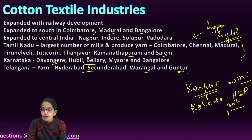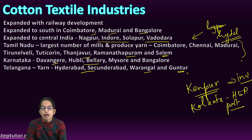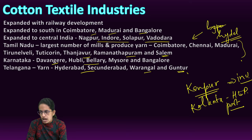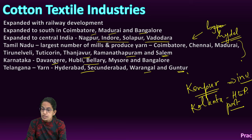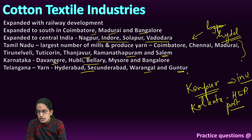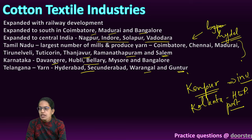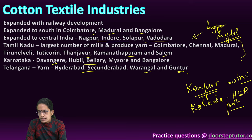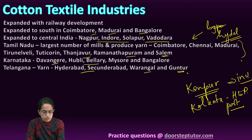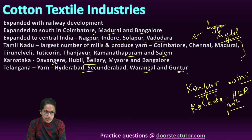In Uttar Pradesh, Kanpur became a major center due to local investment, along with Hathras, Saharanpur, Modinagar, Agra, and Lucknow. In West Bengal, it was predominantly the Hooghly area, along with Howrah, Serampore, Kolkata, and Shyamnagar. Tamil Nadu had abundant hydel power, which was required for the mills, leading to numerous cotton textile plants being established there. Kolkata mills developed due to hydroelectric power potential and port facilities.